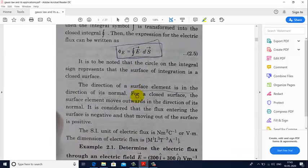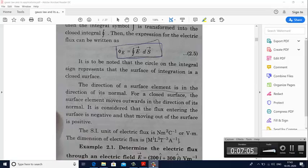So the unit of flux is newton meter square per coulomb or volt per meter, and the dimension of electric flux is M1 L3 T-3 A-1. You can also calculate the dimension using the formula, which is quite simple. So this was introduction about electric flux. If you have any doubts, please mention in the comment section. Thank you.